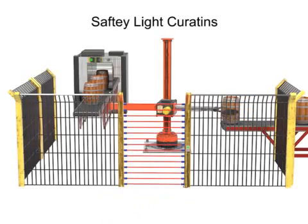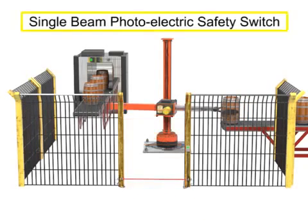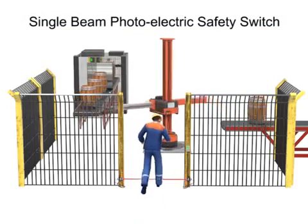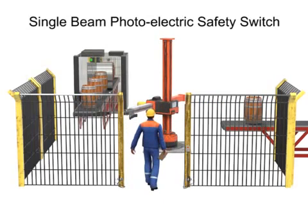Another type of light barrier is called a single-beam photoelectric safety switch. These work in the same way as a light curtain but have only one beam of light, similar to an automatic garage door sensor. Single beams can be useful for preventing unplanned or surprise access to the work area. However, depending on their placement, single-beam lights may not stop a determined person from gaining unauthorized access and potentially causing damage to the robot or personnel.